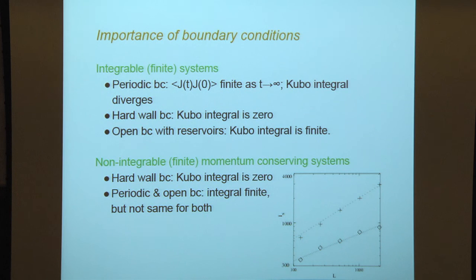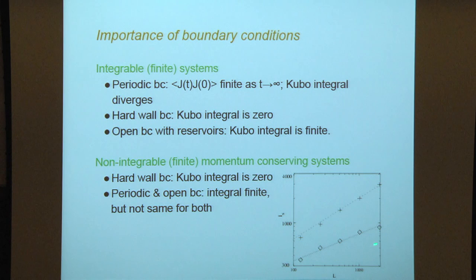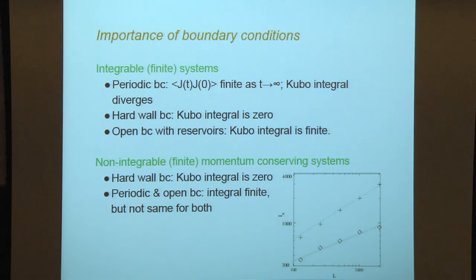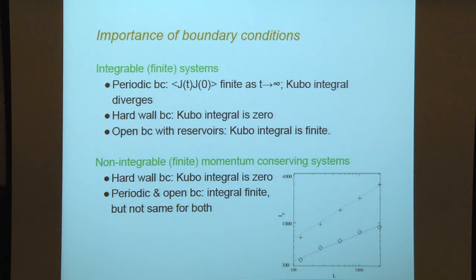So if boundary conditions make a difference, then the question is: can one prove that the integral for open boundary conditions with reservoirs indeed corresponds to the response function for an open system with reservoirs? In this particular case, the exponent is one-third with open boundary conditions and one-half with periodic boundary conditions. It's the same system. This system is hard particles in one dimension that actually undergo two-dimensional collisions — very small particles confined to a tube whose diameter is also very small, so they cannot cross each other.